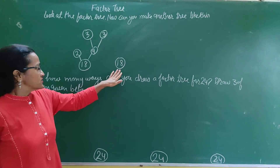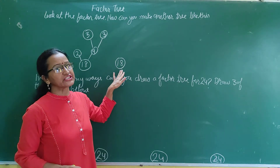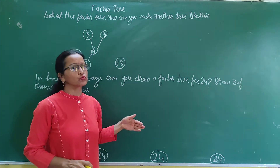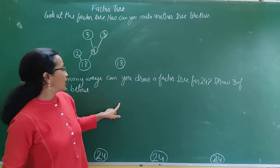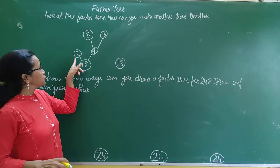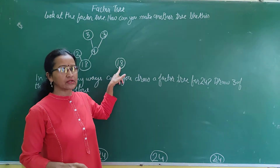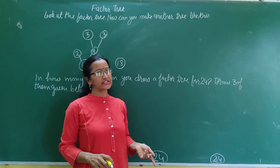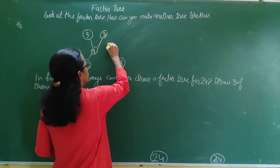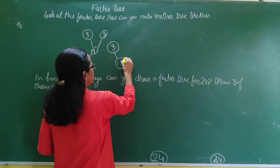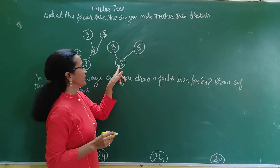Now in the same way, you can make the factor tree of 18 in another way. You have to write that 18 comes in which table. So right here we can write 3 and 6. 6 threes are 18.